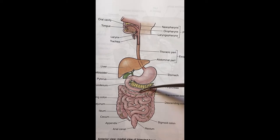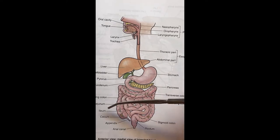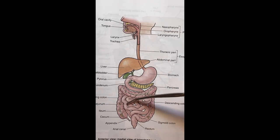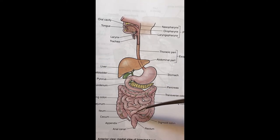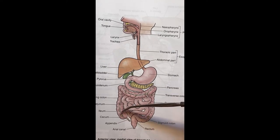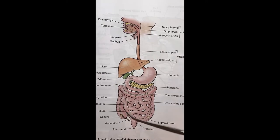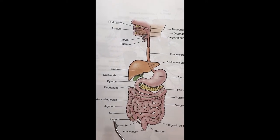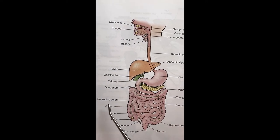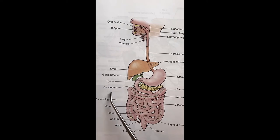After the pyloric sphincter we turn into the duodenum. The second part is the jejunum, which is this part you can see here. The final part that enters into the large intestine is the ileum. So you can see the words: ileum, jejunum, and duodenum.